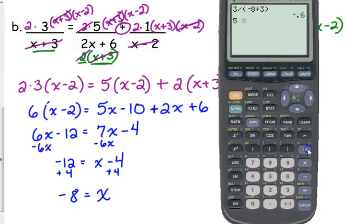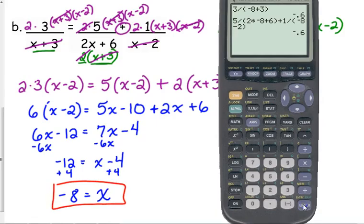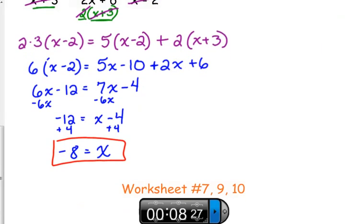Just make sure that with these denominators, you put parentheses around the denominator, or your calculator will not compute it as you intend for it to. Both sides give us negative 0.6, so negative 8 is our final answer. So let's practice with sums similar to this. 7, 9, and 10 are on your worksheet.